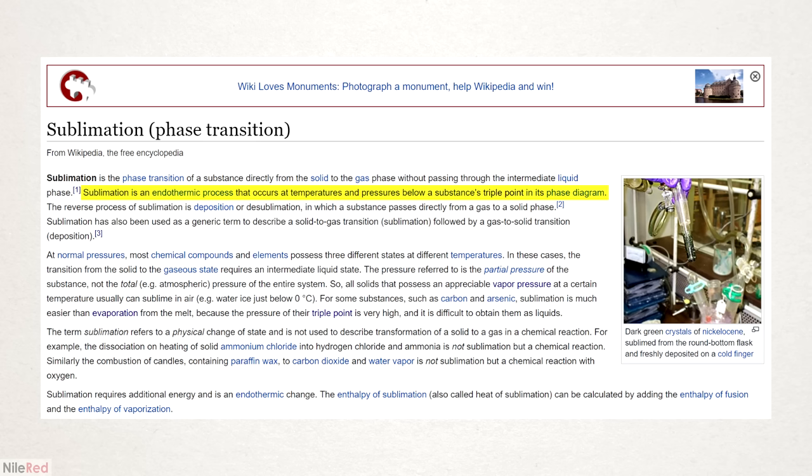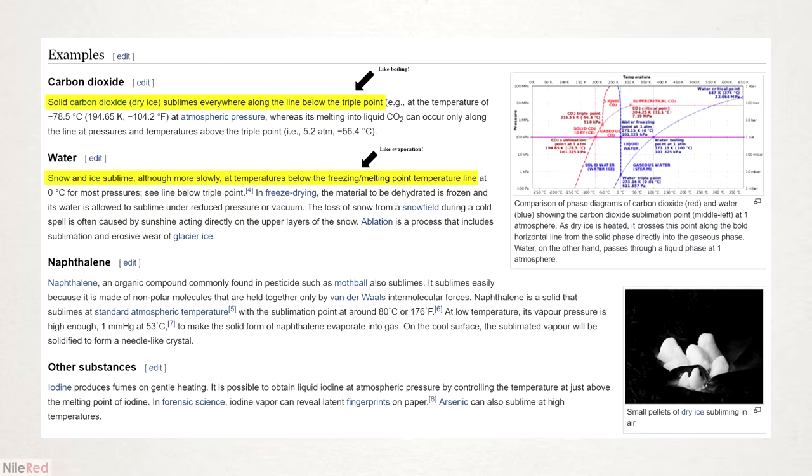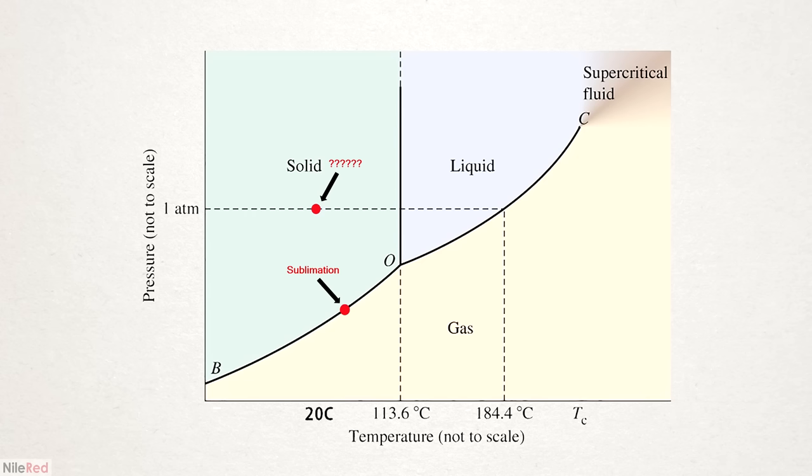Okay, so that's off to a good start, but then it goes on to say that it's also just the generic transition from solid to gas. And for the rest of the article, it just uses both definitions interchangeably. I think to solve all this confusion, we just need to make a new term that exclusively describes the evaporation of solids. The term sublimation would then only describe the proper phase change that occurs below the triple point.